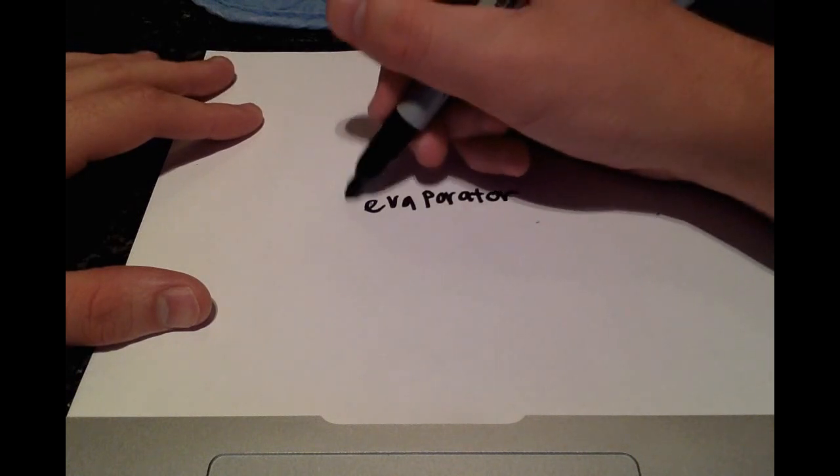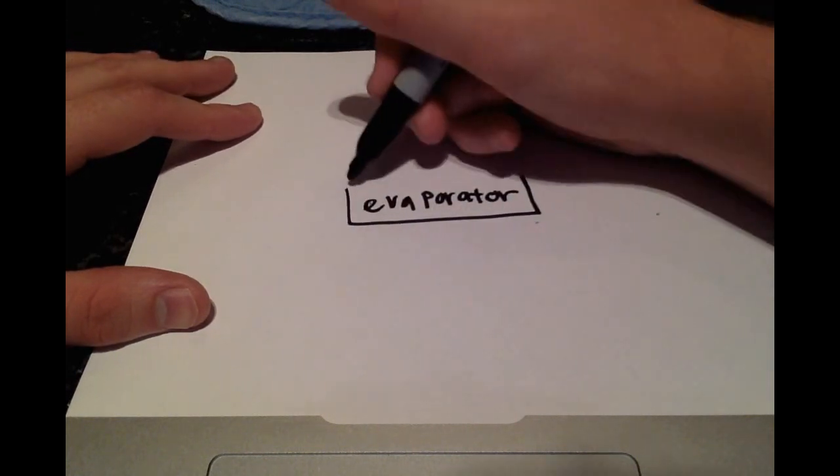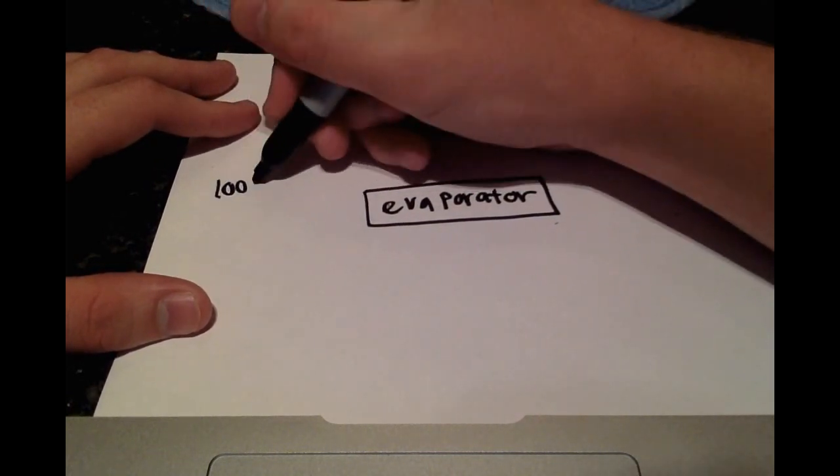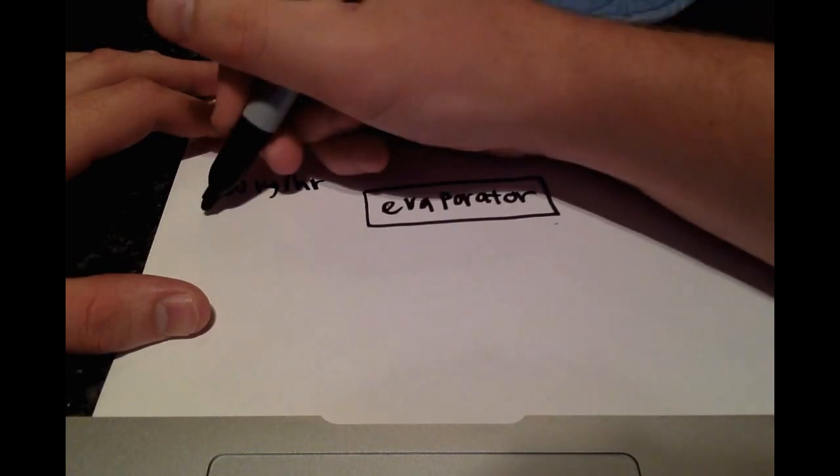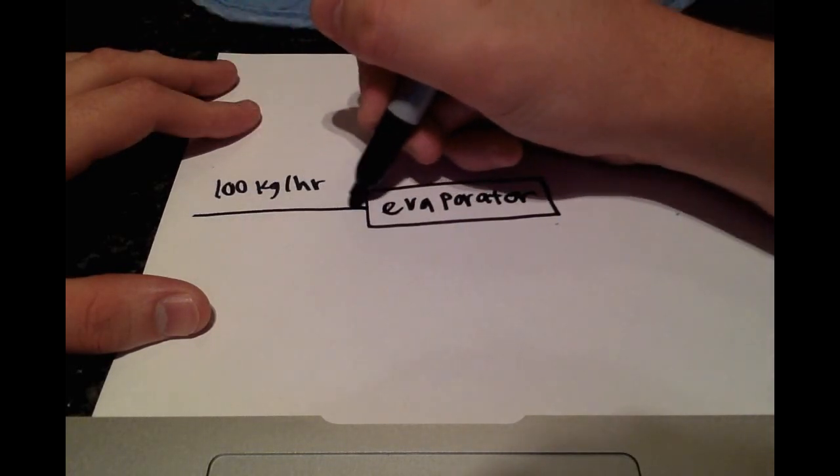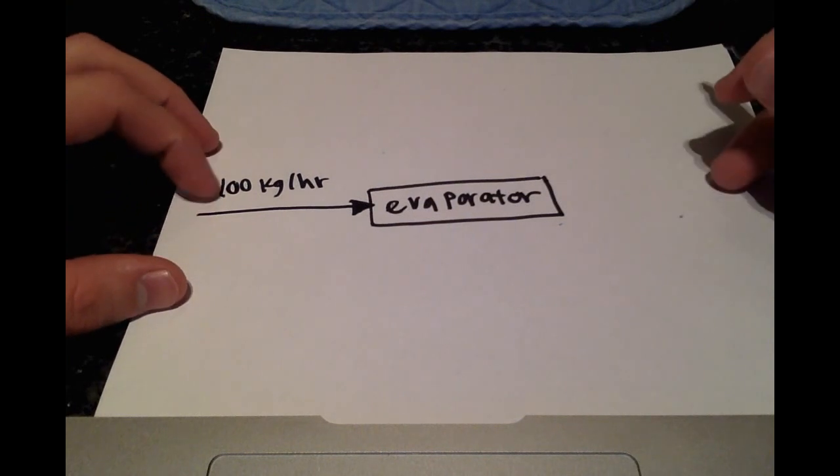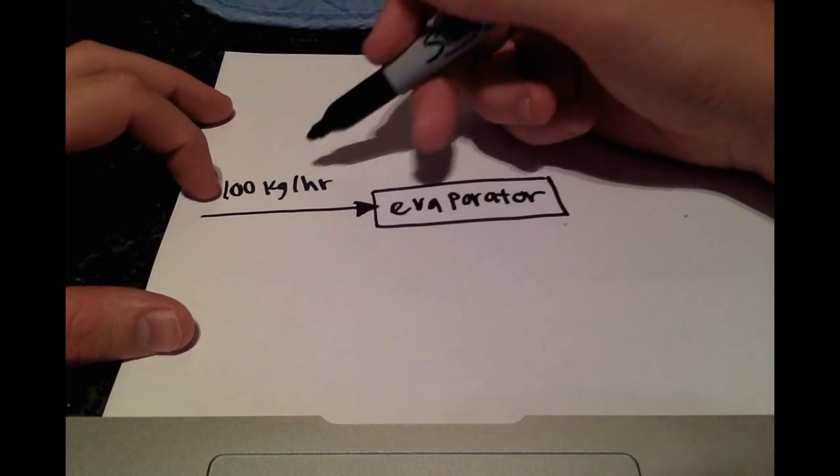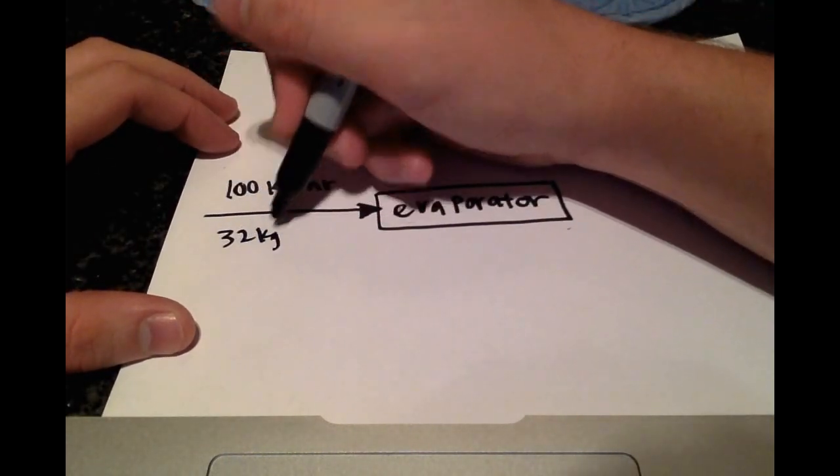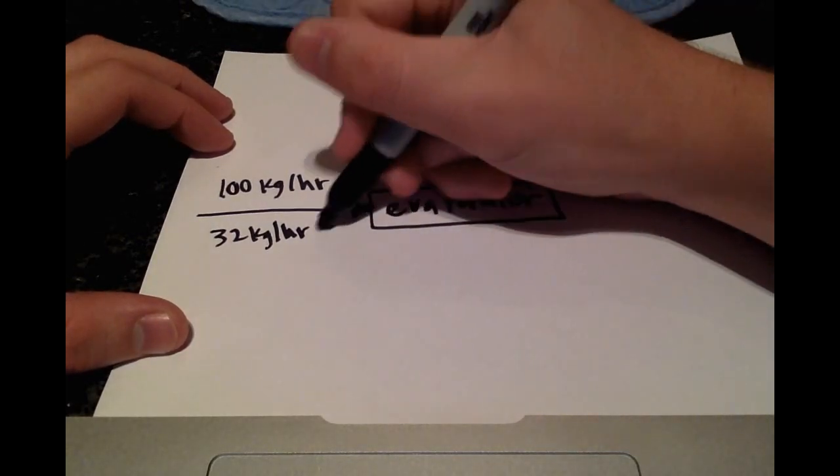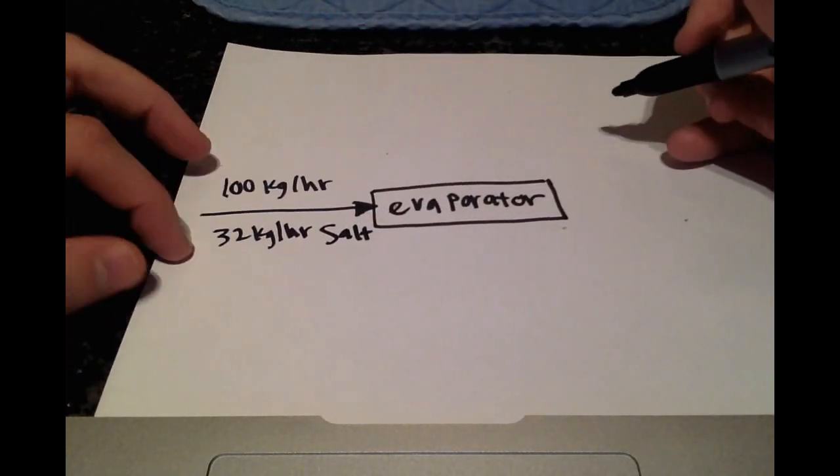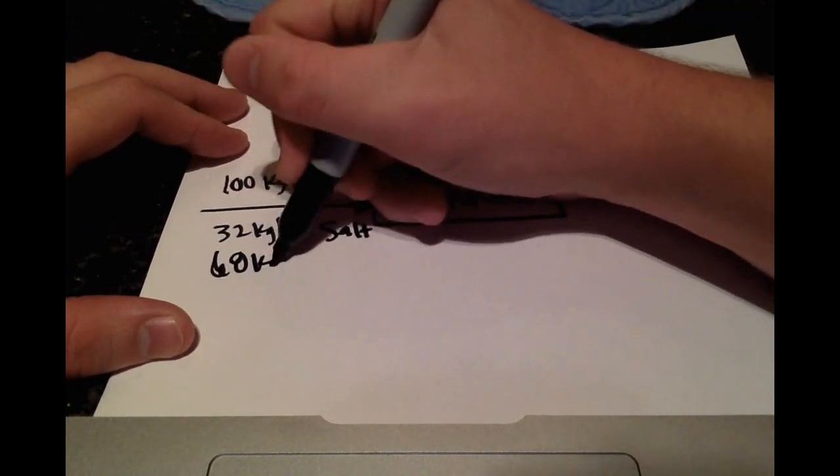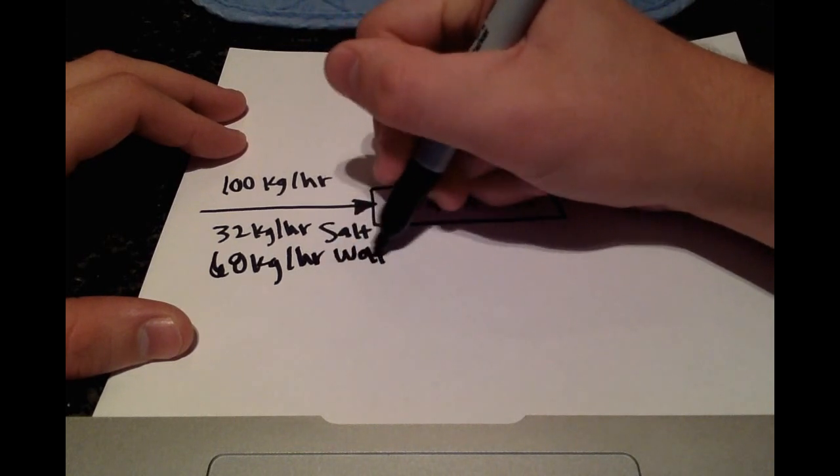So we have our evaporator here, and going in at 100 kilograms per hour is our salt solution. We know that it's 32 weight percent salt, so 32% of 100 is just 32 kilograms per hour of salt. That leaves the remaining amount to be water, so 68 kilograms per hour of water.